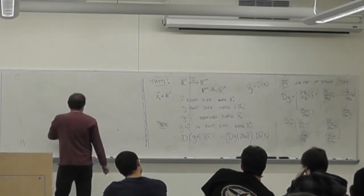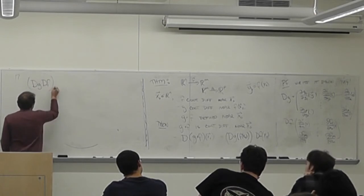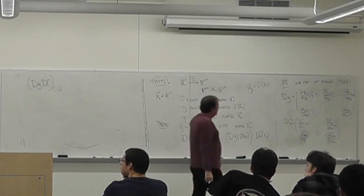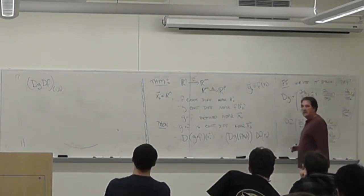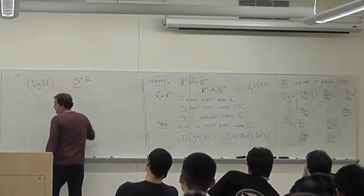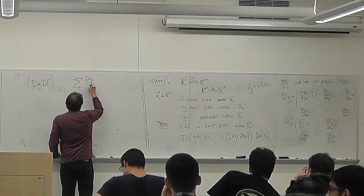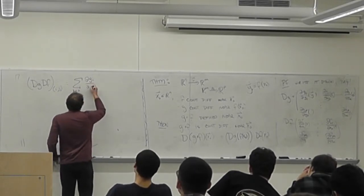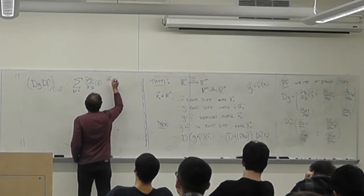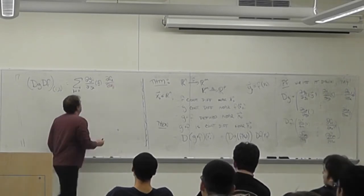If I look at the product DG times DF and pull out the (i,j) entry, it's just a sum over k of: partial of G_i with respect to Y_k, evaluated at Y, times partial of F_k with respect to X_j, evaluated at X. This is exactly the dot product of the i-th row of DG with the j-th column of DF.